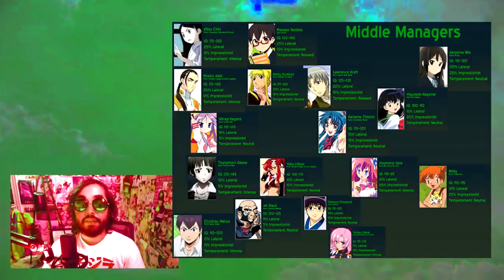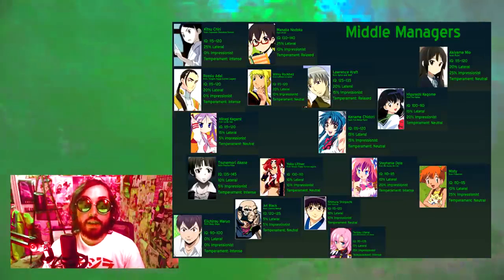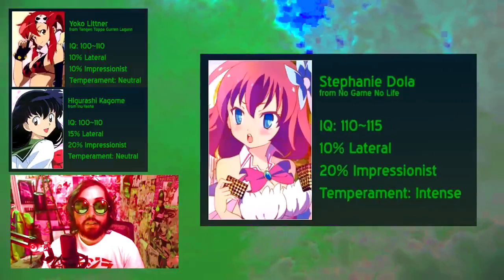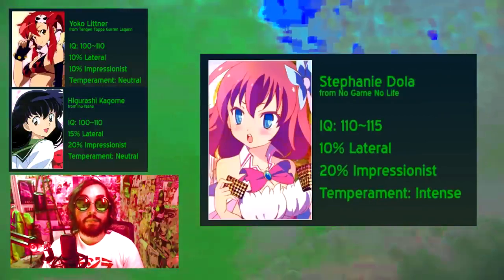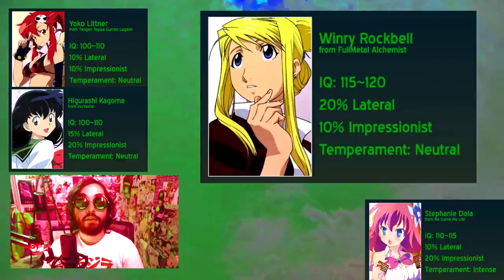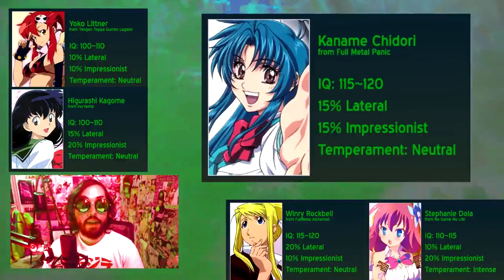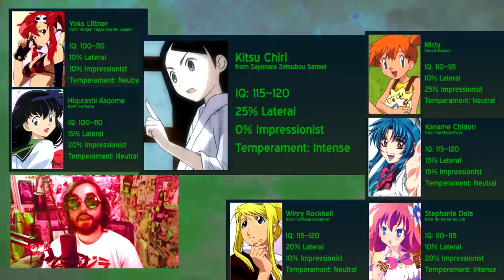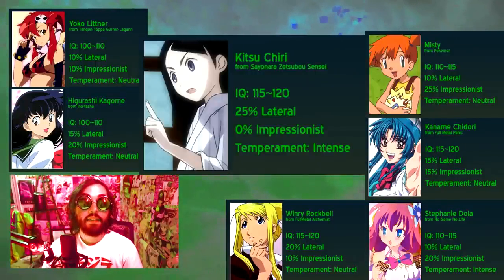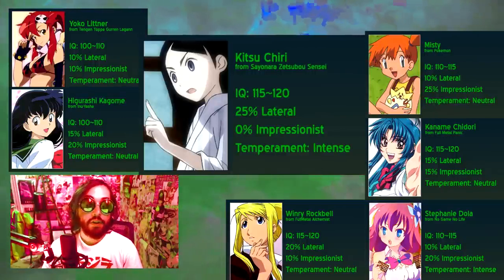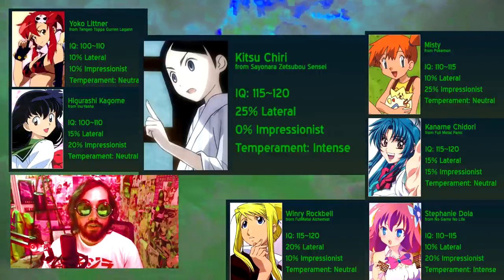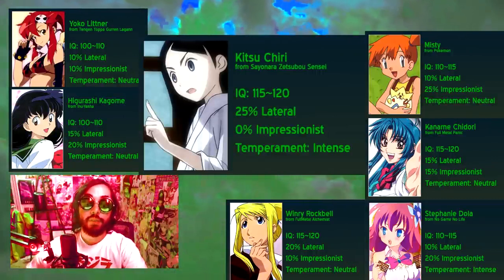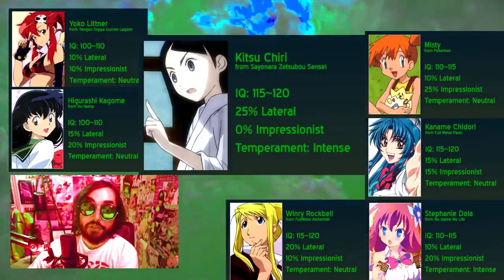The nagging girlfriend archetype in any culture essentially represents that culture's platonic ideals — a person who demands that the main character become more like those ideals. Since Japanese society is very lexically driven, characters like Yoko from Gurren Lagann, Kagome from Inuyasha, Steph from No Game No Life, Winry from Fullmetal Alchemist, Kaname from Full Metal Panic, and Misty from Pokemon are all highly critical of risky behavior, annoyed by egotism, and in love with their man's mysterious charisma.